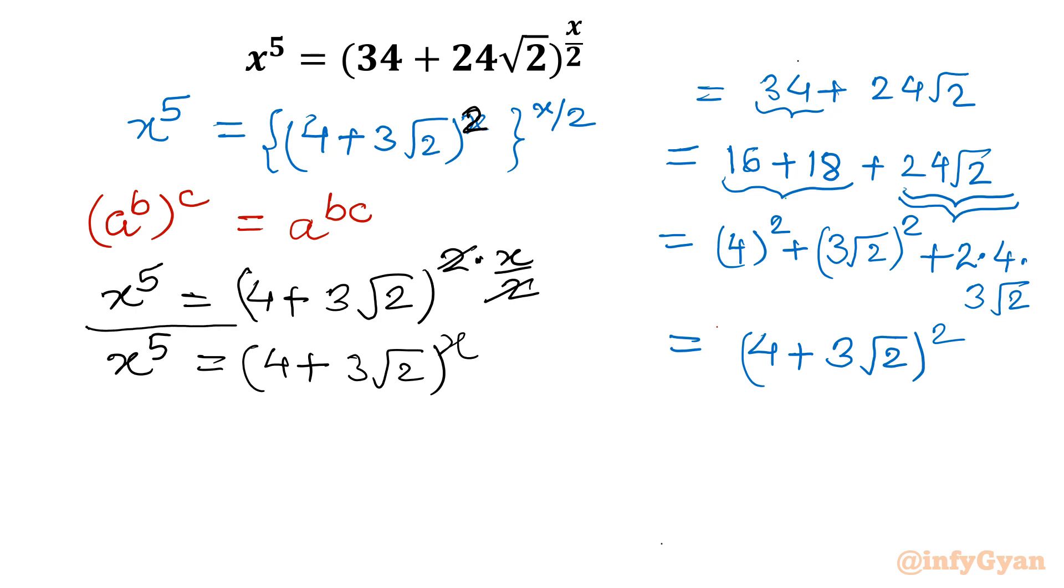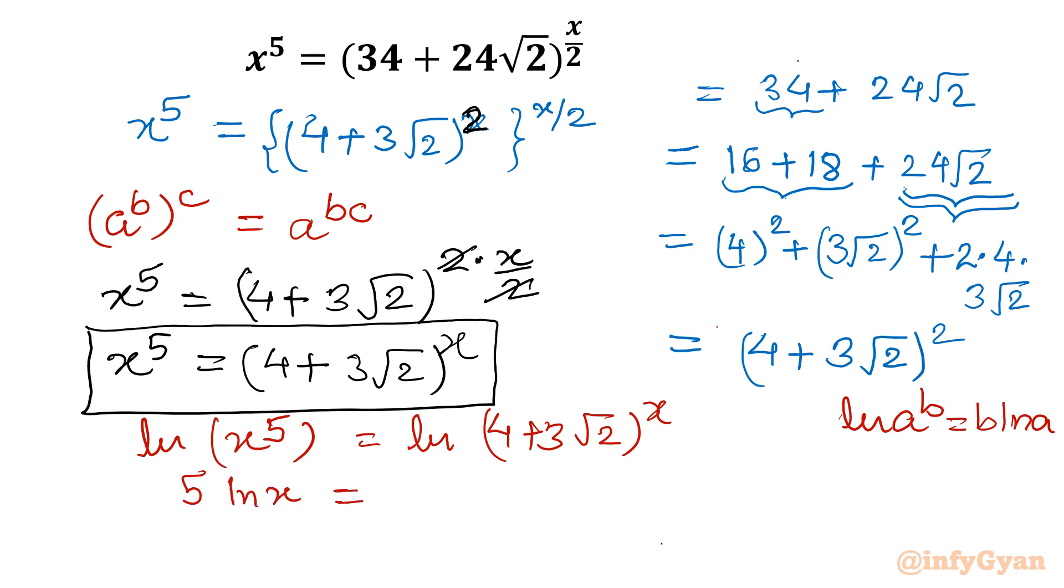Now this is set for application of Lambert W. Let's take ln both sides. So I will write ln x power 5 equal to ln 4 plus 3 square root 2 whole power x. Now use property of ln that is ln a power b equals b ln a.